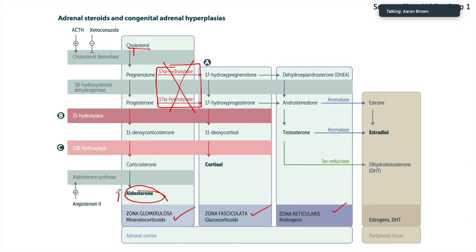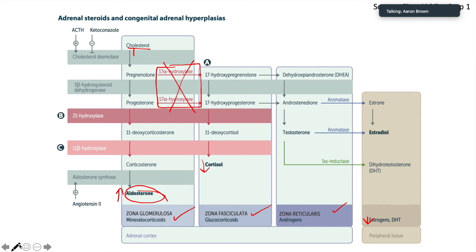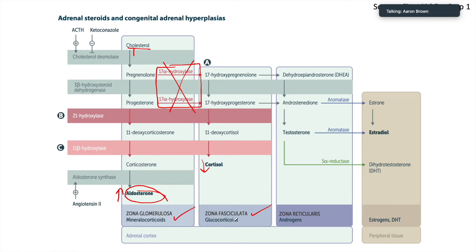So we expect elevated aldosterone, reduced cortisol, and reduced estrogens and DHT. Pretty straightforward, pretty simple. So, 17-hydroxylase deficiency leads to elevated aldosterone and decreased cortisol. That's a little too easy.